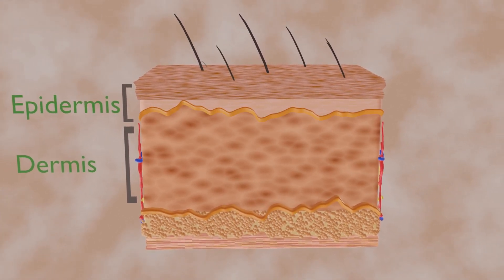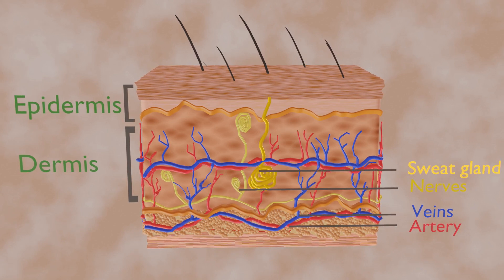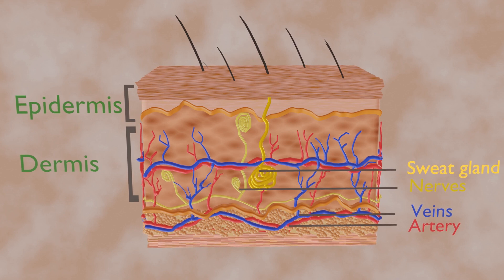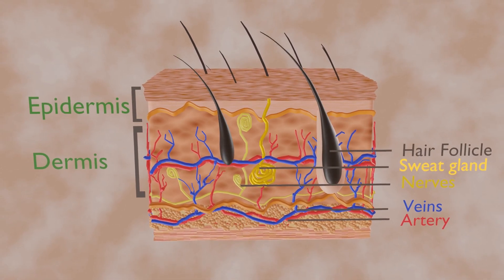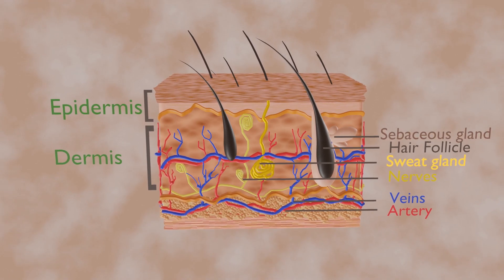Dermis contains nerve endings, blood vessels, sweat glands, and pilosebaceous unit. The pilosebaceous unit is a complex mini-organ consisting of three anatomic components: hair follicle, sebaceous gland, and erector pili muscle.